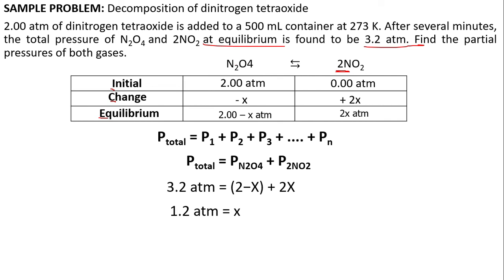This is not yet the final answer. It's just the x. What we want to do is to substitute this x to the equations in the equilibrium row. 2 minus x, substitute 1.2 atmospheres. This will give us 2 minus 1.2 atmospheres, and the final answer is 0.8 atmospheres. That's for N2O4. Now for NO2, we have 2x, so it's 2 times 1.2 atmospheres. This will give us 2.4 atmospheres. So these are the partial pressures of both gases. That's it.